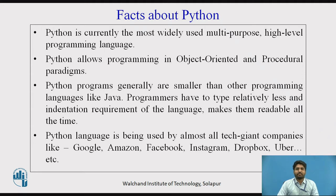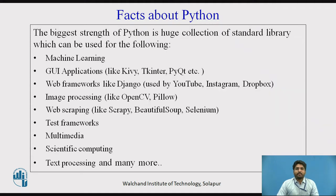Python language is being used by almost all tech giant companies like Google, Amazon, Facebook, Instagram, Dropbox, Uber, etc. The biggest strength of Python is its huge collection of standard libraries which can be used for machine learning, GUI applications, web frameworks, image processing, web scraping, test frameworks, multimedia, scientific computing, text processing, and many more.